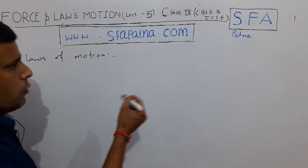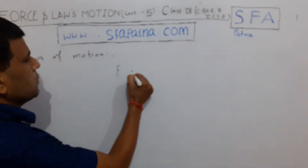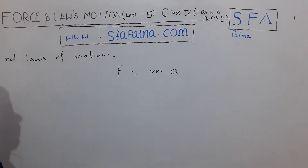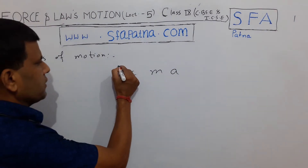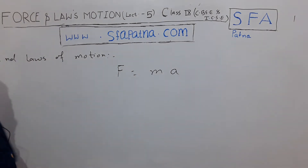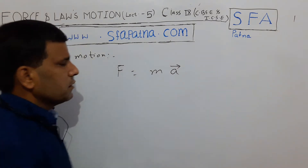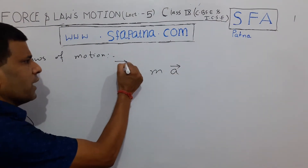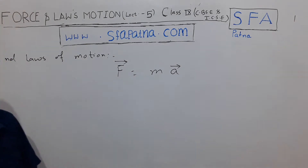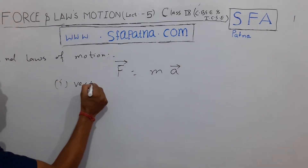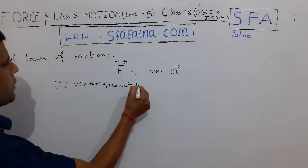In the Second Law of Motion, the formula we derived is: Force equals mass into acceleration. Force is equal to mass into acceleration. Now, what kind of quantity is force? Acceleration is a vector quantity. So when acceleration is a vector quantity, force will also be a vector quantity.